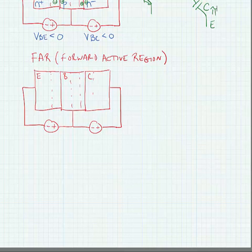Now, when we go to the forward-active region, what happens is this base-to-emitter voltage is made to be positive, whereas the base-to-collector voltage is made to be negative.